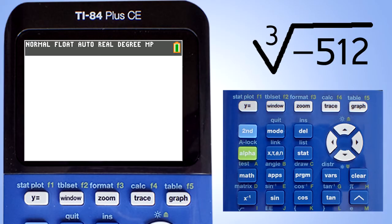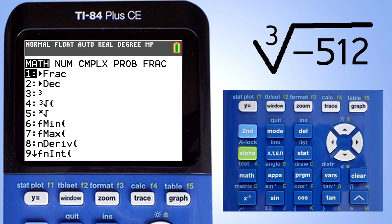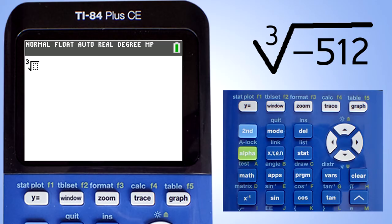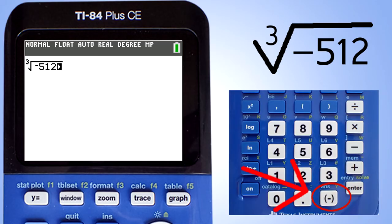This problem is the cube root of negative 512. To do cube roots, press the math key. This window pops up. Go down to number 4 and press the enter button. This window pops up. Enter negative 512.